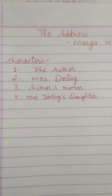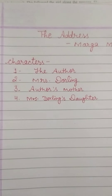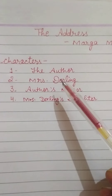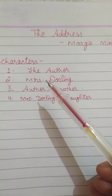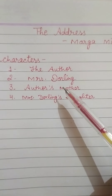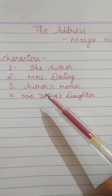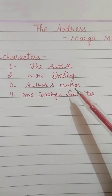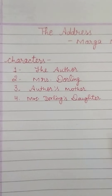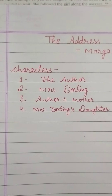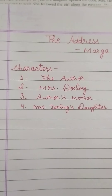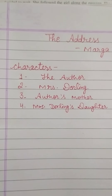The characters are: the author Marga Minko herself, Mrs. Darling — an acquaintance of the author's mother — the author's mother Mrs. S, and Mrs. Darling's daughter. This story is a very touching story, and it is about pre-war and post-war life.